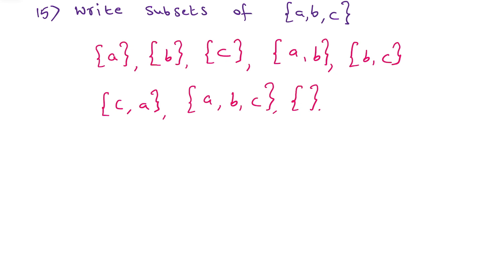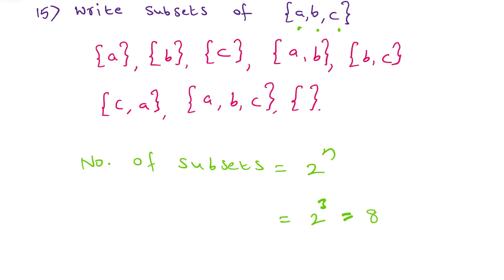After writing the list of subsets, confirm using the number-of-subsets formula, which is 2 power n, where n is the number of elements. There are 3 elements, so 2 power 3 = 2×2×2 = 8. So total 8 subsets should be there, and we count 1, 2, 3, 4, 5, 6, 7, 8 — confirmed.